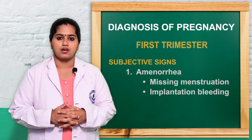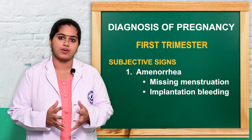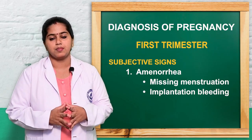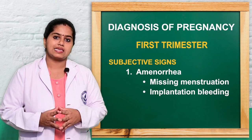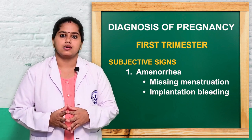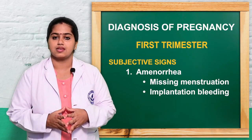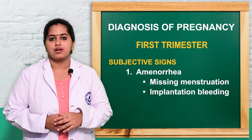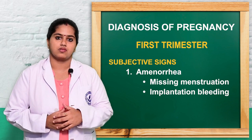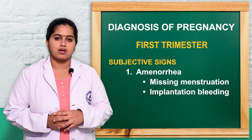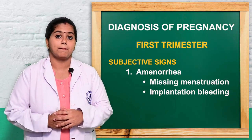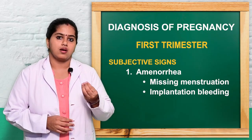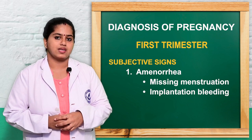Next, we will see what signs and symptoms appear in each trimester and how we diagnose pregnancy. In the first trimester, the subjective or presumptive symptoms are what the mother reports. The first is amenorrhea — for a woman of reproductive age with a regular 28-day cycle, a missed period can indicate pregnancy. Note that some women may experience implantation bleeding — a small bloody discharge when the embryo attaches to the uterine wall.